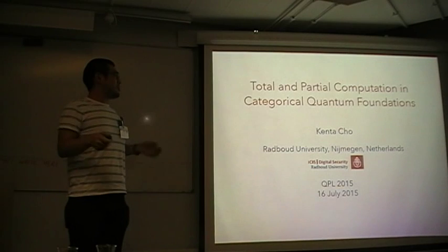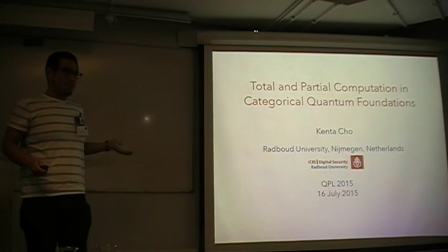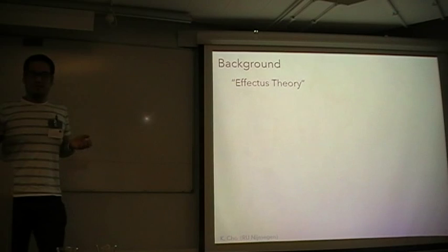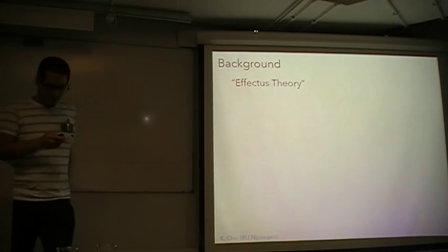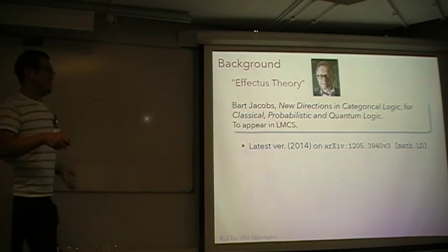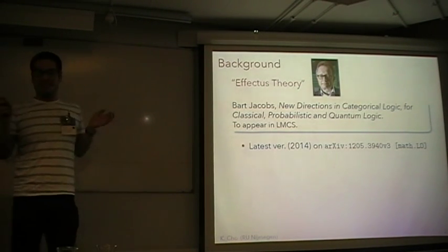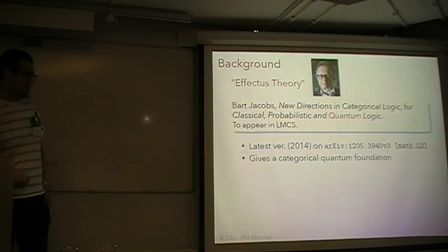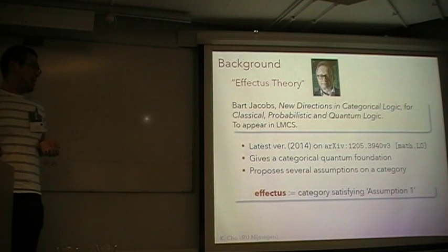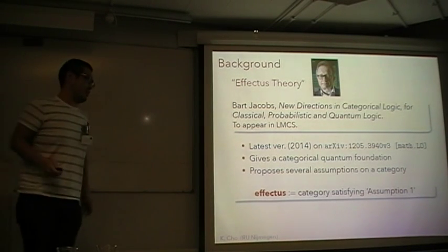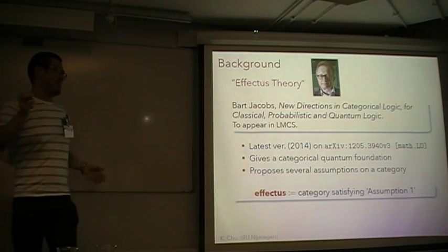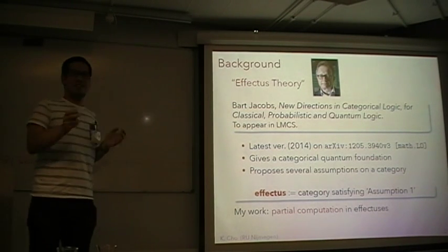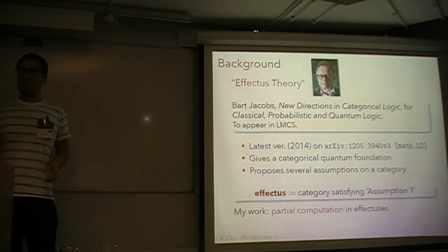I will talk about total partial computation. First of all, I want to say that this work is based on effect theory. What we share is this paper by Jacobs, 'New Directions in Categorical Logic for Classical, Probabilistic, and Quantum Logic.' This paper gives a categorical quantum foundation and proposes several axioms for a category. An effectus is a name for a category satisfying one of these axioms, and my work is on partial computation in such effectuses — and it is heavily used in Bram's talk.